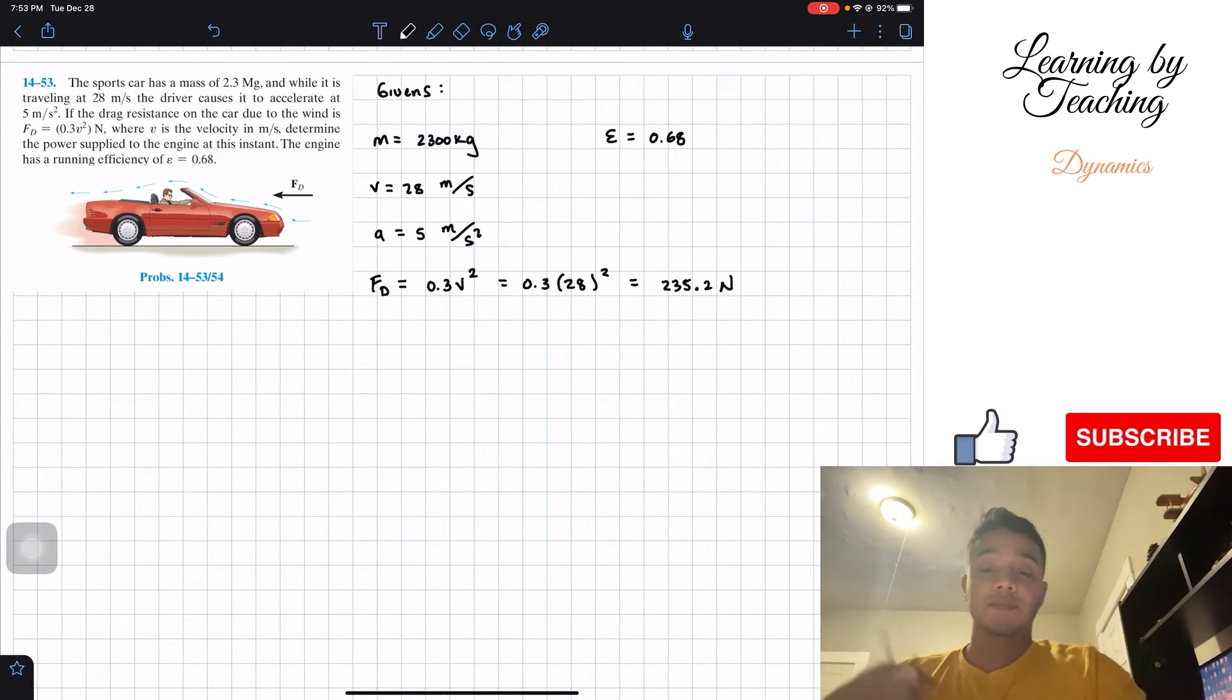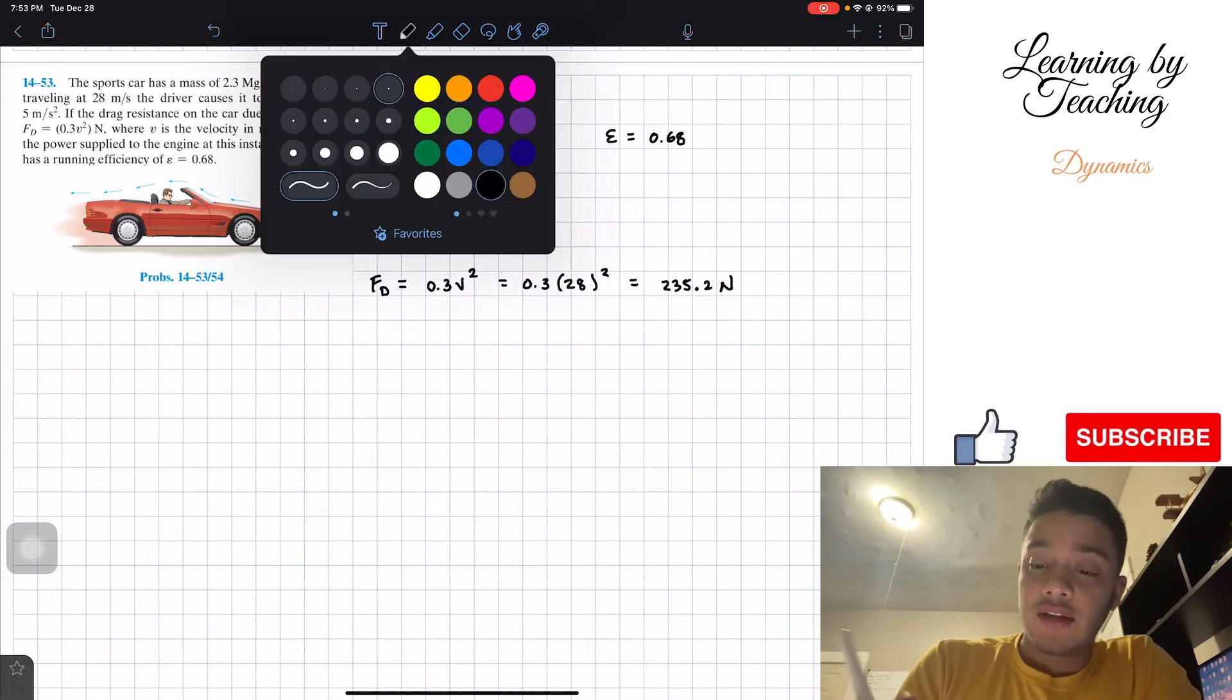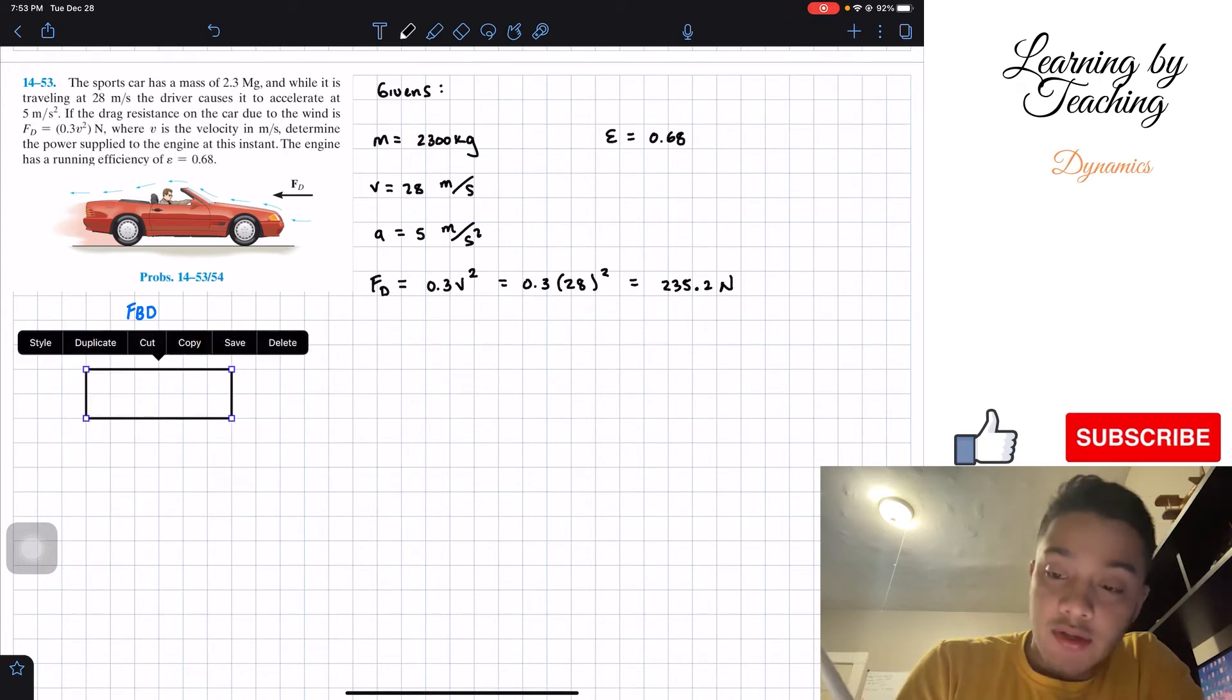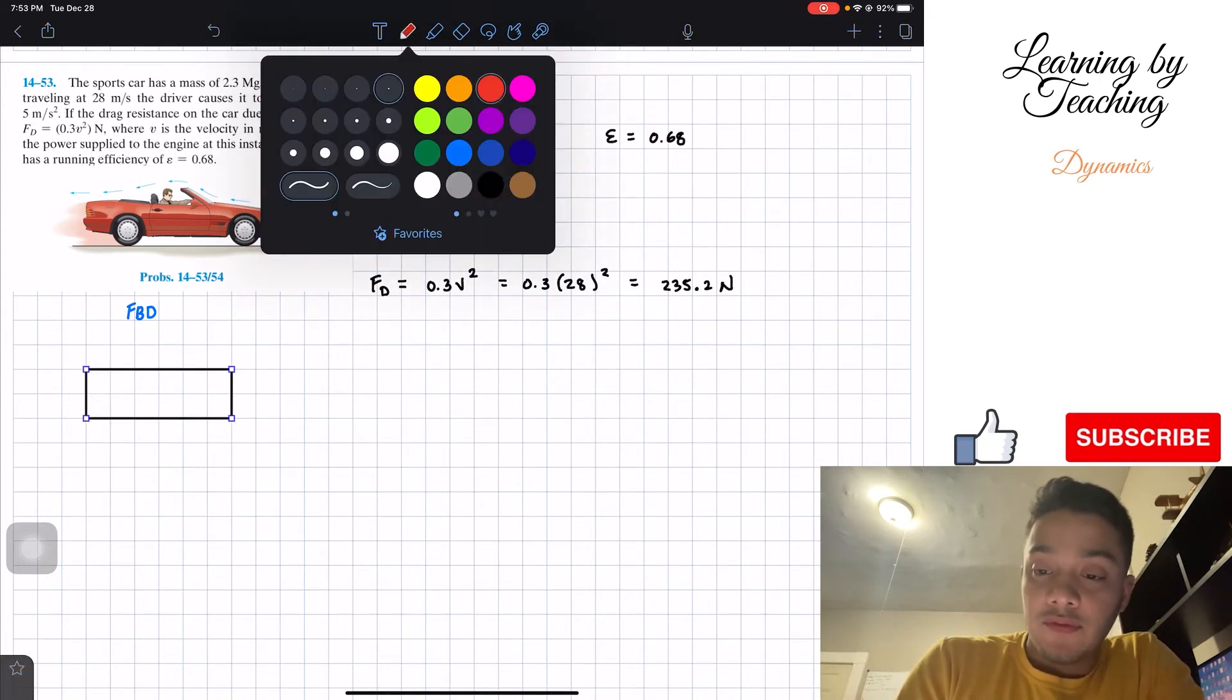So what next? Well, in order to find the power supply, since we know power is force times velocity, we need to find the force that this car is driving. And in order to do that, we're going to do a free body diagram. So we're going to do a free body diagram of our car, simplify it as a rectangular shape.